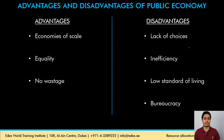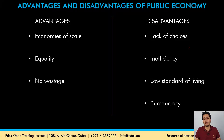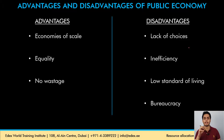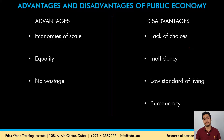The second disadvantage is inefficiency. The government is not trying to maximize profit, so there is bound to be inefficiency in the utilization of resources — for example, if a job can be done by two people, the government might employ three or four. Third is a low standard of living, as consumer demand is not the center of production activity and people cannot consume all the goods they want. The last disadvantage is bureaucracy — when the government controls resources, decisions may benefit individual government departments rather than society as a whole, and nothing can be done about it.